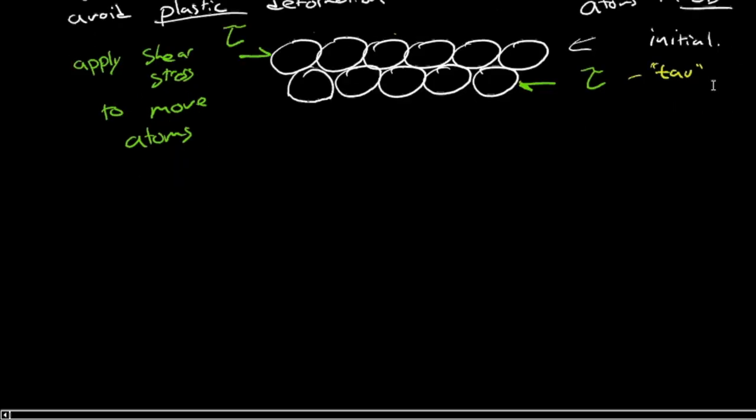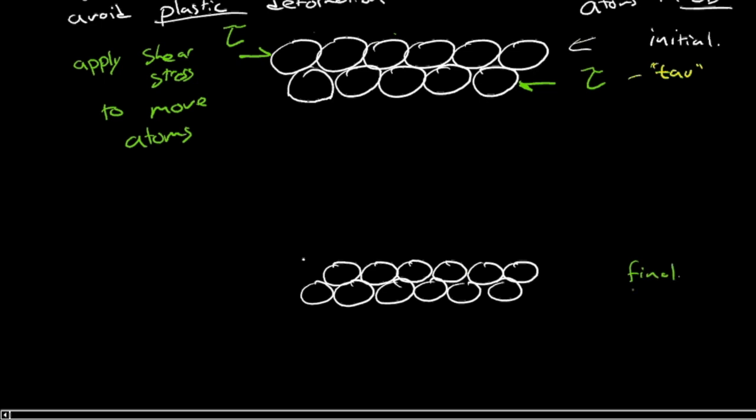And the end, the final state that we're after, to give you a sense for what I'm trying to do, is going to be these atoms move now to new permanent positions. So if they started there, perhaps they end here. We've applied a shear stress there and there, and move them to new positions. That was starting, and this is final.